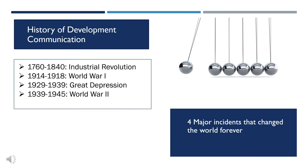To get a better idea of the progress of development communication, it's always good to know the major happenings in the world that had some direct or indirect effect on the process of communication. Here I prepared a chart — let's have a look at the four major historic incidents that changed the world. The first one is the Industrial Revolution, in the period from 1760 to 1840.